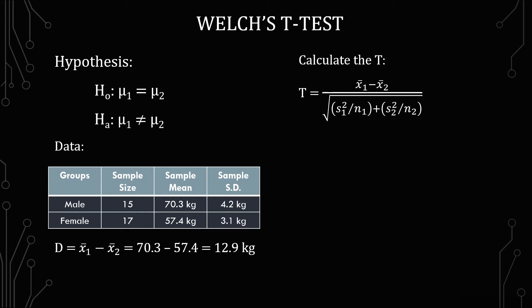When you put the numbers in there you get 12.9 over the square root of 4.2 squared over 15 plus 3.1 squared over 17.